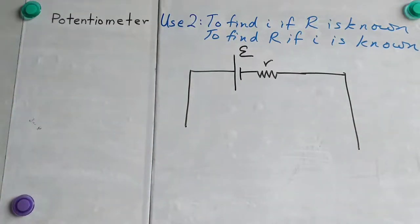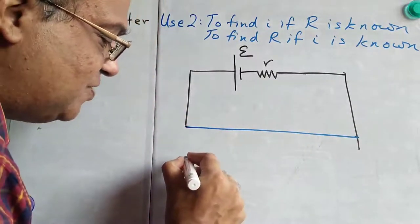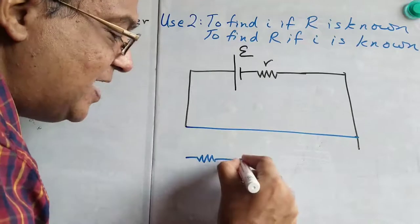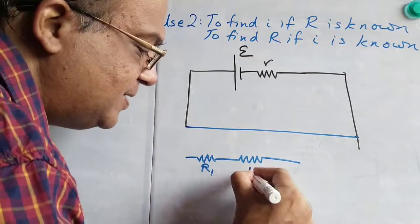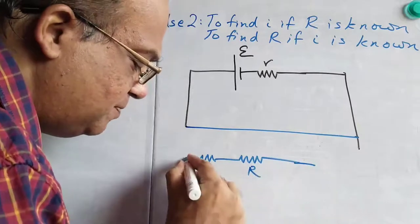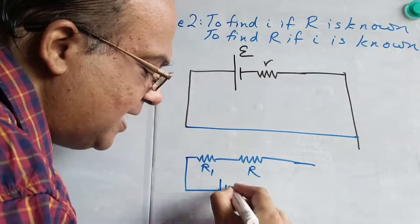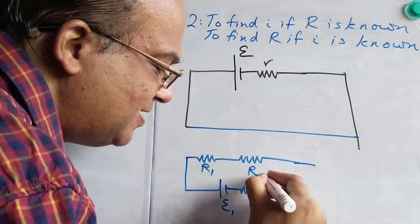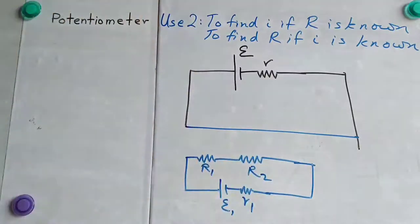Now, here is another circuit, which is having two resistances, R1 and R2, connected to a cell of EMF E1, and internal resistance small r1, and some current is going here.